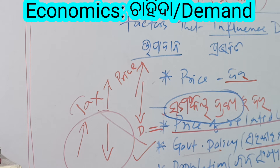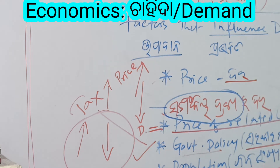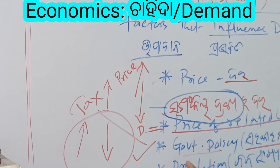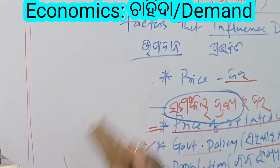Population: if population increases, demand increases. If population falls, demand falls. So population and demand have a direct relation. One factor is direct relation, one is different — let's continue.